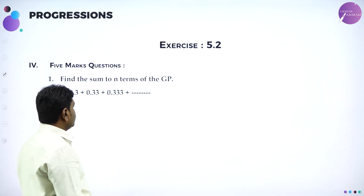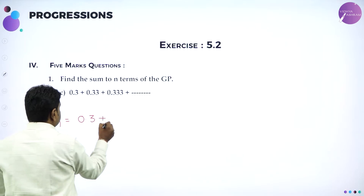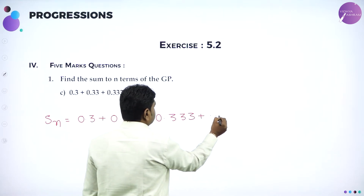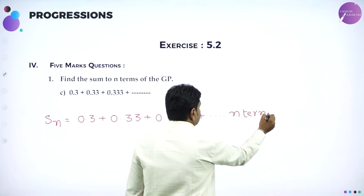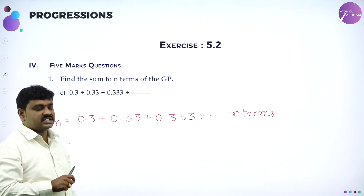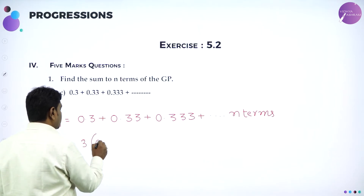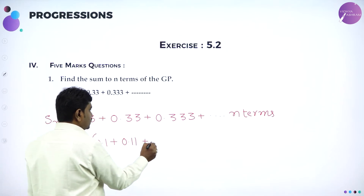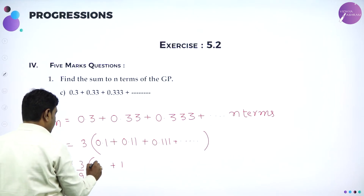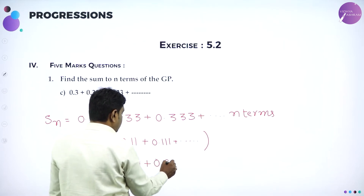I hope all of you understood this. Next we have decimals. Sn = 0.3 + 0.33 + 0.333 + ... till n terms. You should add till n terms. Again same method, but the difference is common ratio will be less than 1 in this case. So now I will take 3 common. If I take 3 common it will be 0.1 + 0.11 + 0.111 + ... and so on.